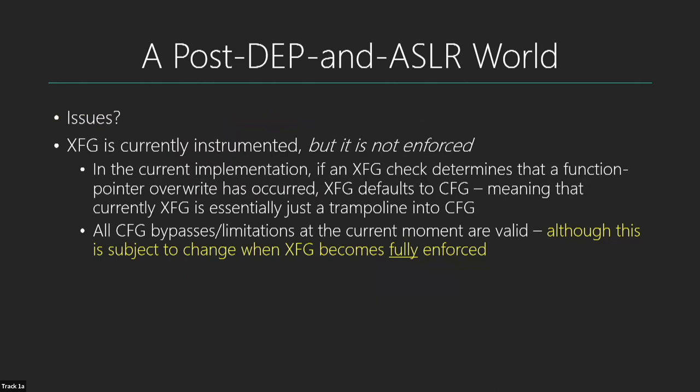However, XFG is currently instrumented but not enforced. In the current implementation, if an XFG check finds a hash mismatch indicating a function pointer override, it just defaults back to CFG for compatibility. So Extended Flow Guard is essentially a trampoline into Control Flow Guard right now, meaning we only have to worry about CFG currently. That's subject to change — this is a newer mitigation available mainly in Windows Insider Preview and not yet fully enforced.